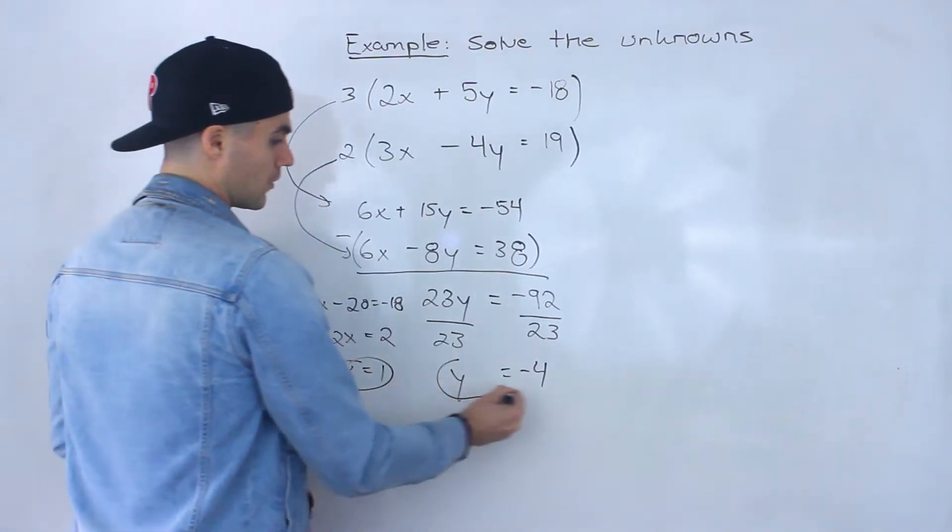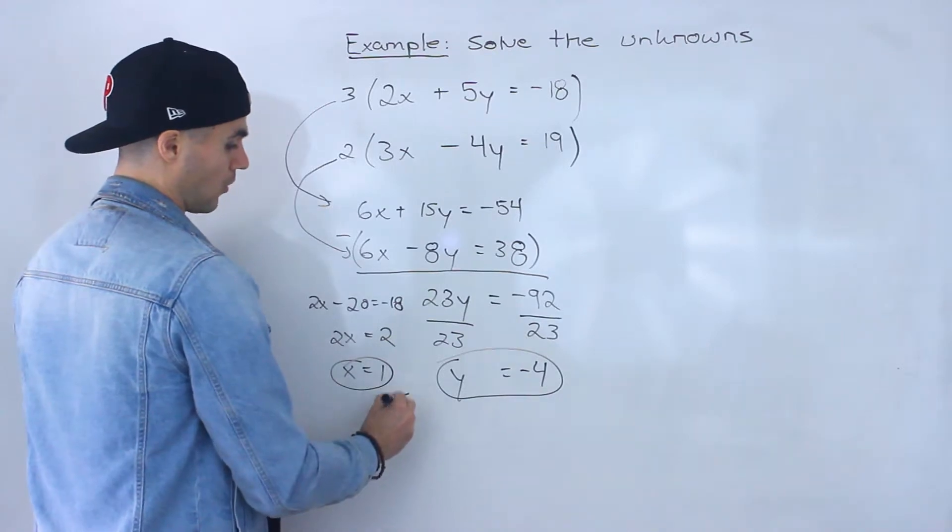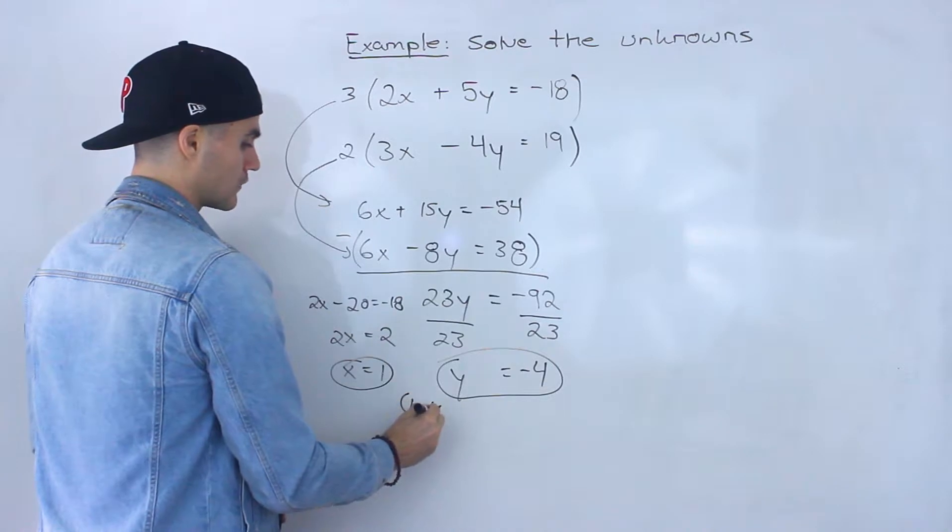Right so x is equal to 1, y is equal to negative 4. That's the solution to this problem or these two lines. These are two lines here. They intersect at the point 1 and negative 4.